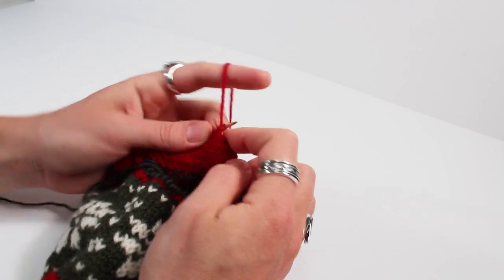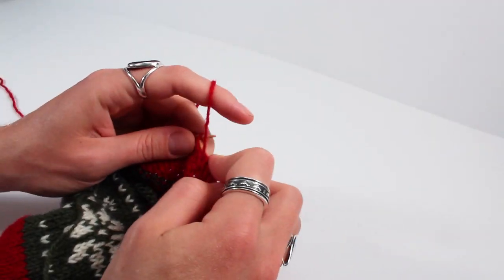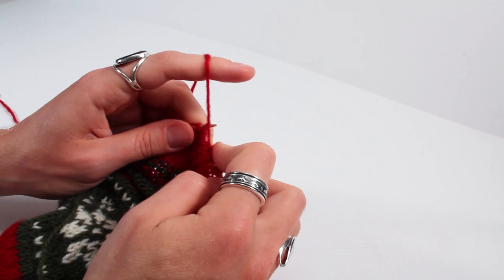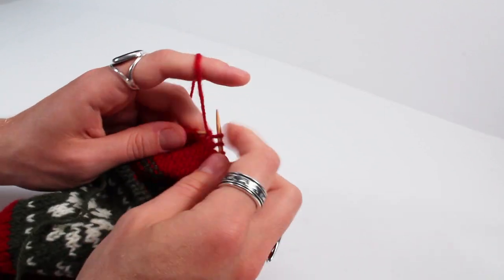Purl back across to where you need to turn your work or the previously worked short row stitch. That again will look like that double stitch.